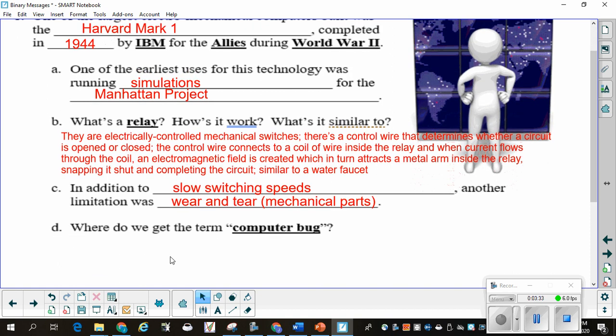Now, where did we get the term computer bug? It was an actual bug. The Harvard Mark II had a moth in it, which was causing problems. And Grace Hopper, which is a famous computer scientist, one of the very first programmers ever, was the one to coin the term a bug, computer bug.